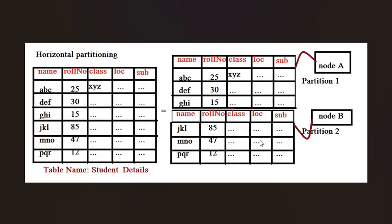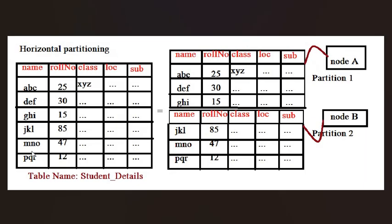Here is a simple illustration of horizontal partitioning. Suppose we have a table called student details with columns: name, role number, class, location, and subject. If I perform horizontal partitioning on this table, I pick a few rows and save them on one node — that creates the first partition. Then I pick other rows and save them on a different node — that becomes the second partition. Column names remain the same, but data is saved row-wise on different nodes.